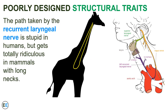The path taken by the recurrent laryngeal nerve is stupid in humans, but gets totally ridiculous in animals with long necks like the giraffe. If you were designing humans or giraffes from scratch, the recurrent laryngeal nerve would be much shorter and just go from the brain to the larynx. The current arrangement makes no sense from a good design point of view. But since humans and giraffes evolved from ancient ancestors in which the nerve was looped around the heart, the current anatomy makes sense.